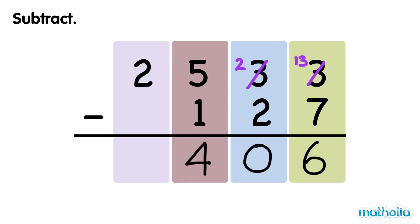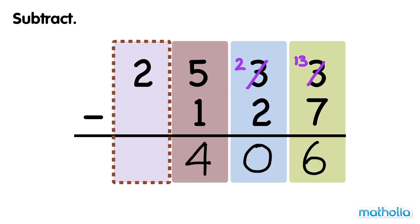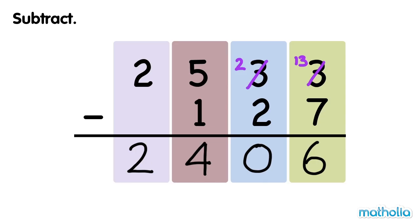Finally, subtract the thousands. 2 thousands minus 0 thousands equals 2 thousands. 2,533 minus 127 equals 2,406.